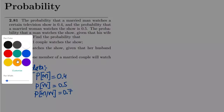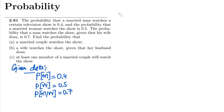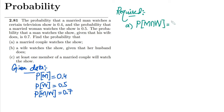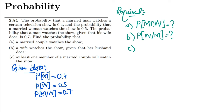We have three things to find. In part (a), find the probability that a married couple both watch the show — P(M and W). In part (b), find the probability that a wife watches the show given that her husband does — P(W|M). In part (c), find the probability that at least one member of the married couple watches the show — P(M or W).